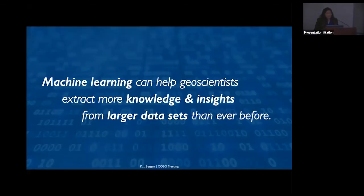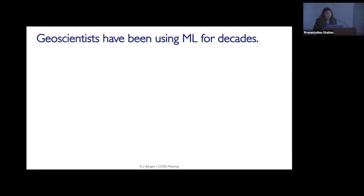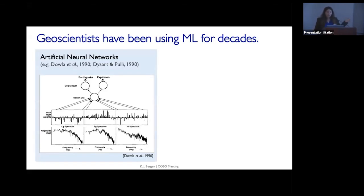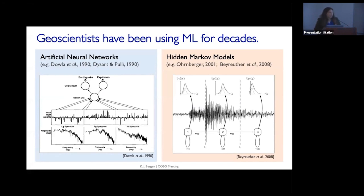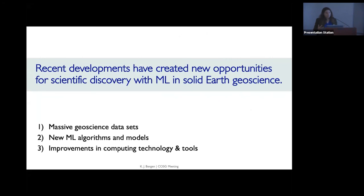Machine learning is a very useful tool for processing large amounts of data, and I say 'than ever before' because geoscientists have been using machine learning for a long time. In the nineties, people were using artificial neural networks for distinguishing earthquakes from explosions. In the 2000s, there was a lot of work with graphical models like hidden Markov models for classifying seismic signals. These techniques are not new, but what's new is that developments from both the geoscience side and the computing technology side have created new opportunities. We now have much larger data sets — massive geoscience data sets that are both a challenge and an opportunity.